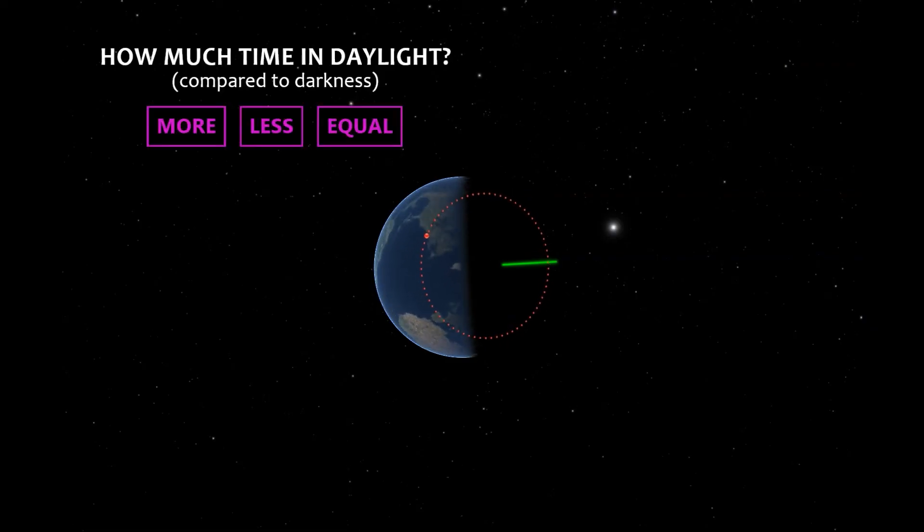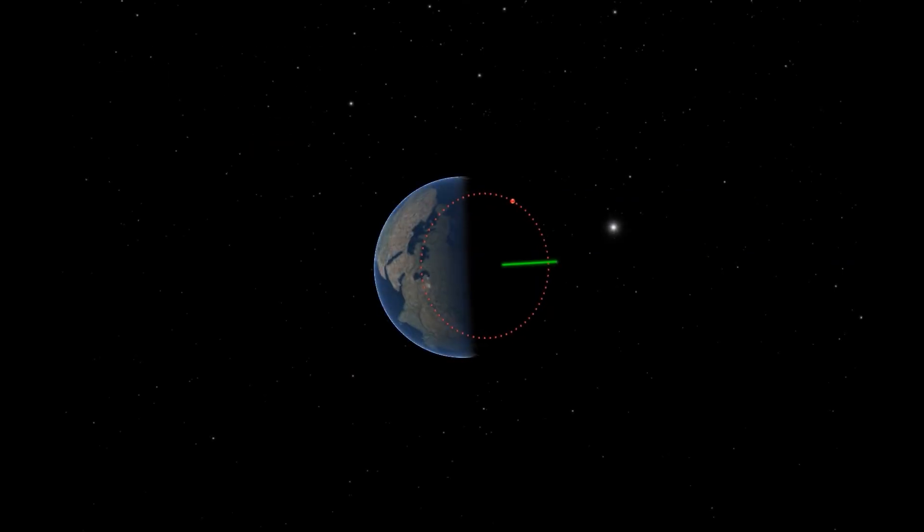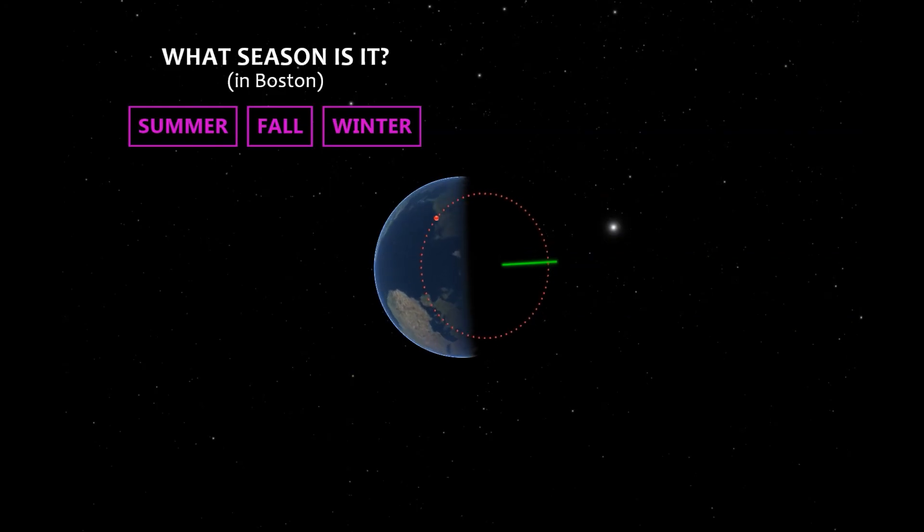Will Boston spend more time in daylight, less time, or will the time be equal? Correct! Boston spends less time in daylight than in nighttime. Let me ask you a follow-up question. What season is it in Boston? Exactly! It's winter, because the northern axis is tilted away from the daylight.